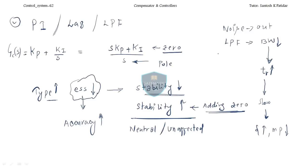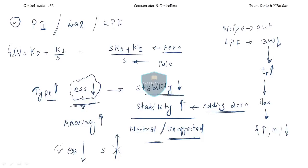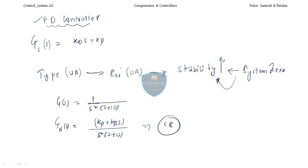Comparing PI and PD controllers: in the PI controller, stability is unaffected and error decreases. In the PD controller, steady state error is unaffected and stability increases. How nice it would be if both the error decreases and stability increases simultaneously — but that is not possible with either PI alone or PD alone.